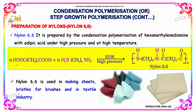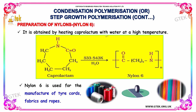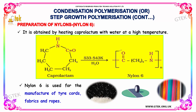Here, n units of hexamethylenediamine reacts with n units of adipic acid at 553 kelvin and high pressure to form Nylon 66. Caprolactam has a closed structure, and at a temperature of 533 to 543 kelvin, hydrolysis results in the formation of Nylon 6. It is obtained by heating caprolactam with water at high temperature.